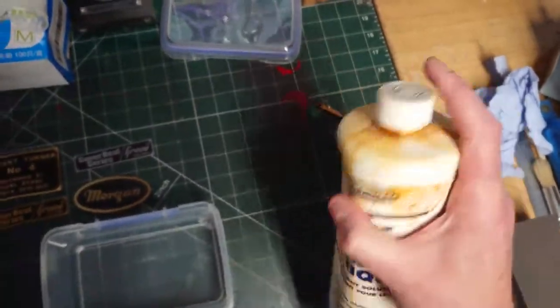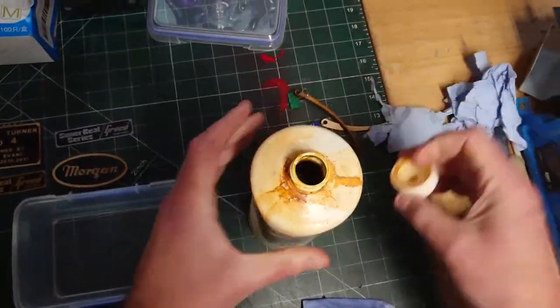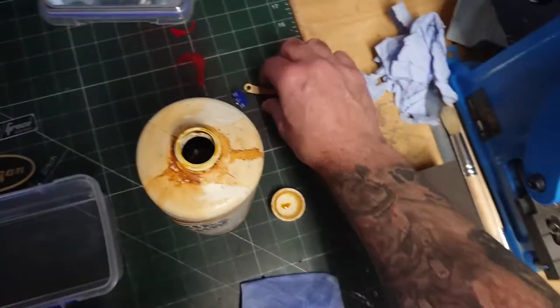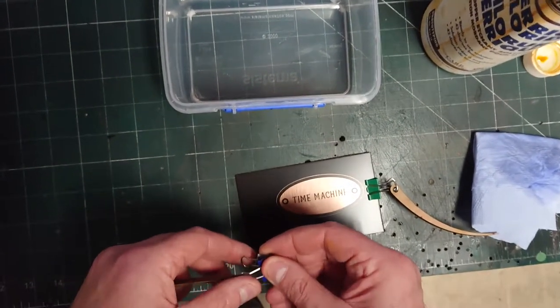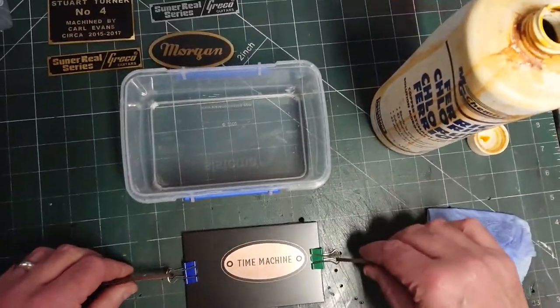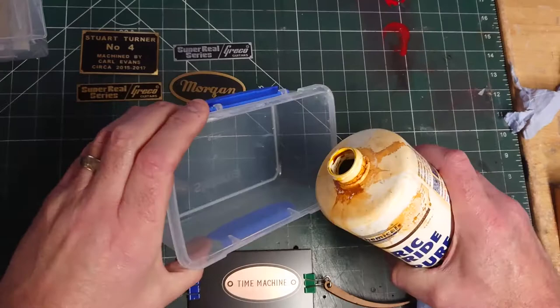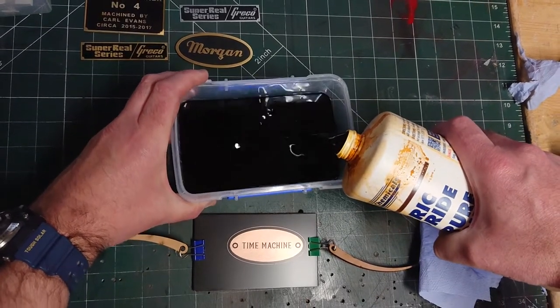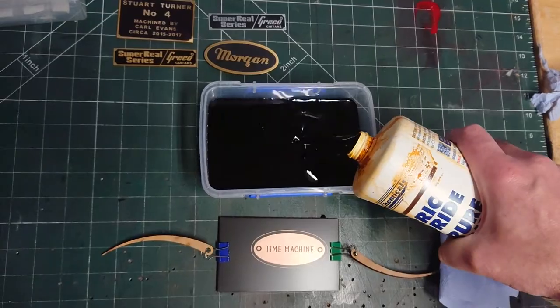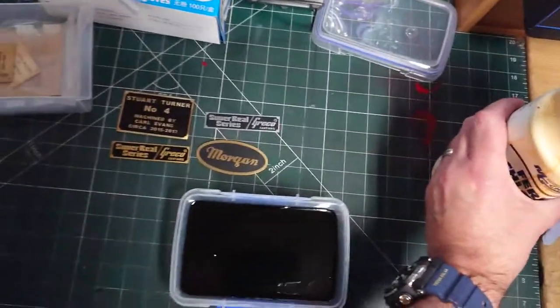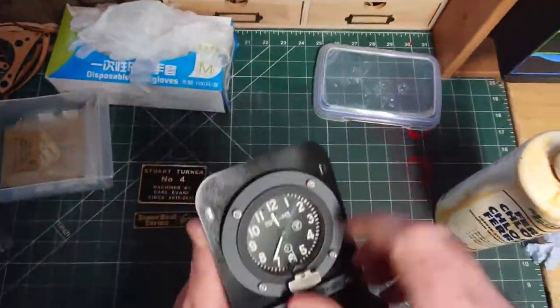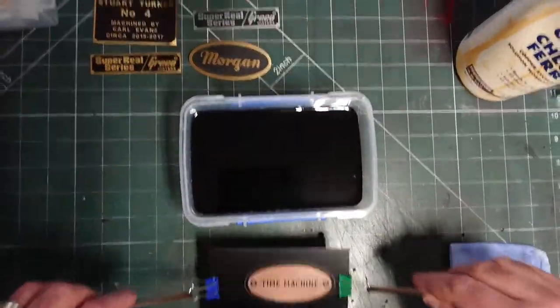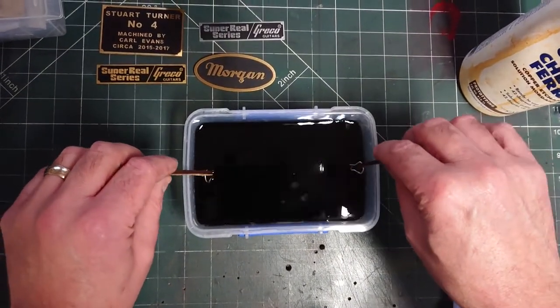This ferric chloride should be at room temperature, it works best when it's a little bit warm. It does go off after a while, well when I say go off it loses its potency. I've had this quite a while so it may take a little while to etch. But anyway, let's see. Nice generous glug of that. Let's have a look, we'll set this to 12 and then we can see how long it takes to etch. So basically you plonk it in and that's it for a little while.